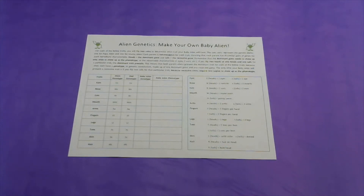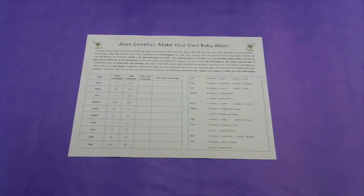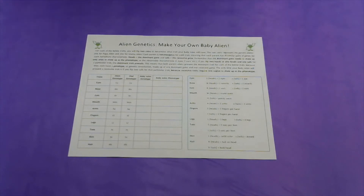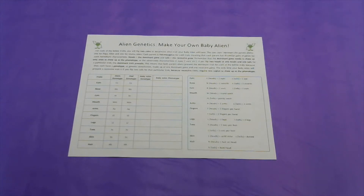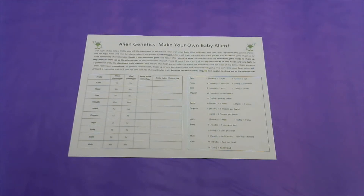Before you start today's STEAM lesson, you will need to find the Alien Genetics handout on the Lynchburg Public Library Facebook page. Once you find the handout, you can either print it out or just keep it pulled up on your computer screen for reference. I apologize — I know the handout is hard to see on this video, so I will go ahead and read you the steps for the experiment at the top of the handout. Be sure to follow along if you have already printed out your copy.